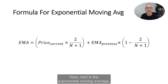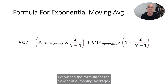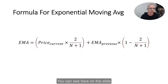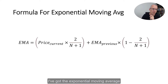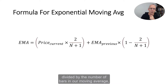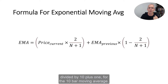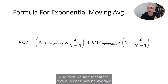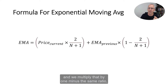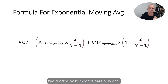Next is the exponential moving average. The formula for the exponential moving average is: EMA equals the current price multiplied by 2 divided by (the number of bars plus 1), plus the previous bar's moving average multiplied by 1 minus that same ratio — 2 divided by (the number of bars plus 1). So if it was a 10-bar moving average, it's the current price multiplied by 2 divided by (10 plus 1).